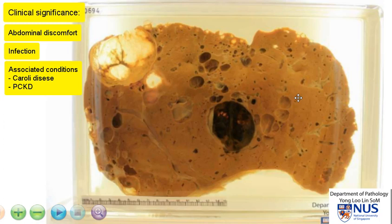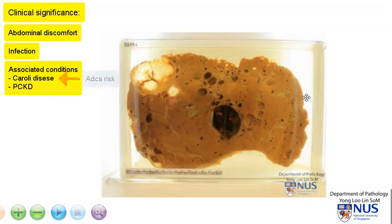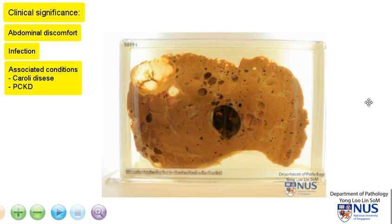In Caroli's disease, there is an increased risk of adenocarcinoma. It is important to look at these patients as a whole because in the background of autosomal dominant polycystic kidney disease, one must also be aware that there are other very clinically significant conditions that the patient is at risk of.